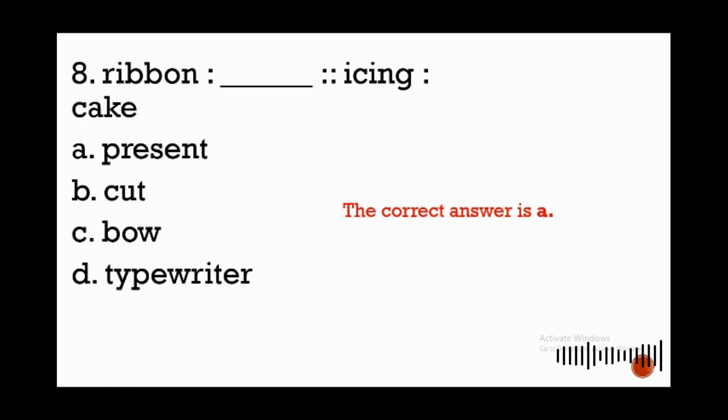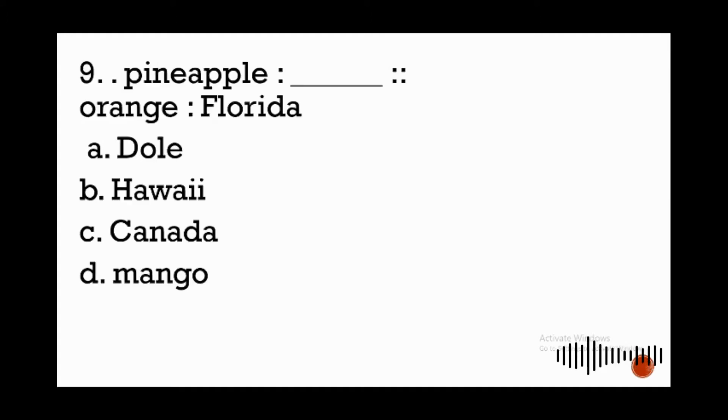Therefore the answer is letter A, present or gift. Icing is used to decorate cake, and ribbon is used to decorate present. Number nine: pineapple is to blank as orange is to Florida. Look at the pair of words orange is to Florida. Orange is a fruit and Florida is a state. What is the relationship of orange to Florida? Oranges are known to grow in Florida, so that is the relationship.